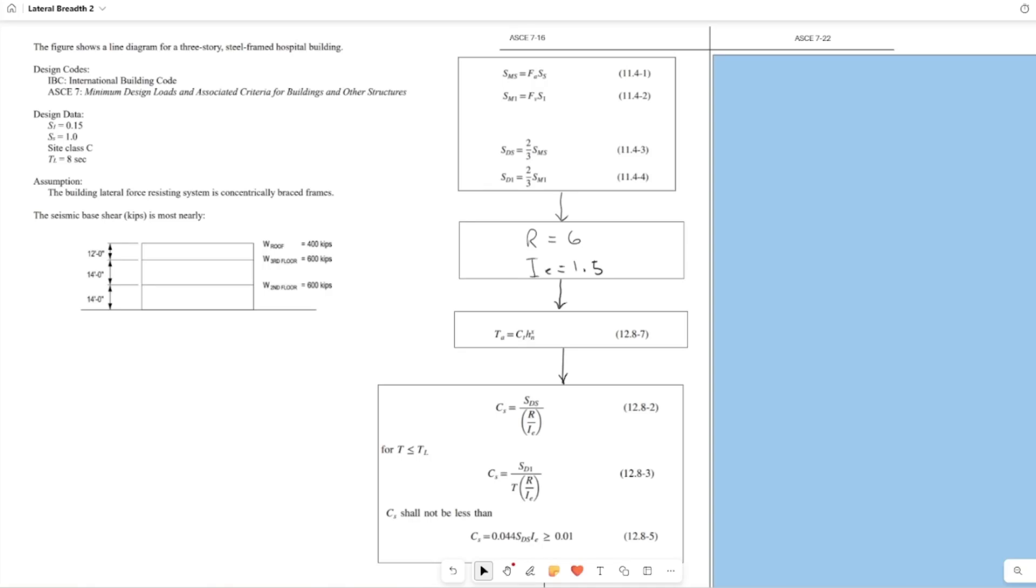I started studying for the SE exam again and was looking at a problem that's pretty typical - they're asking for the seismic base shear. When I looked at this, I decided to use ASCE 7-22, but the solution in the back of the book used ASCE 7-16. I hadn't really looked at the difference between the two, but now that I have, there are actually a lot of really interesting changes I wanted to talk about.